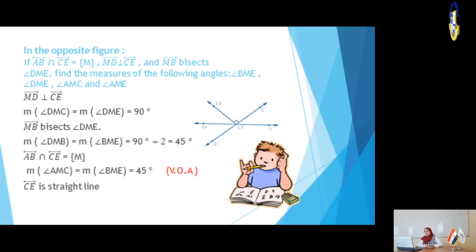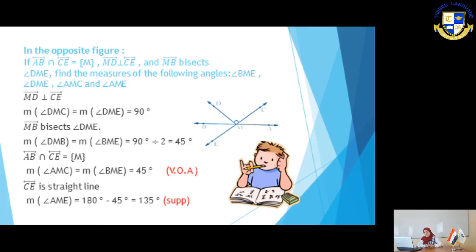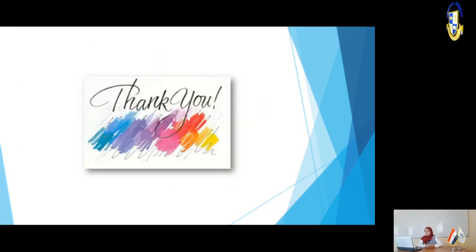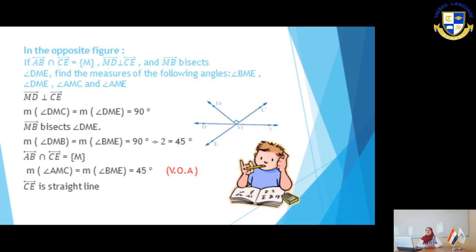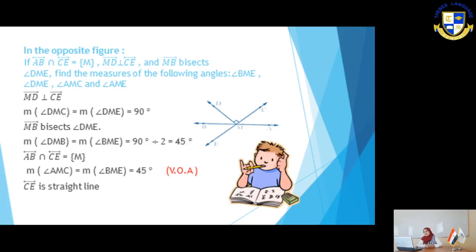Finally, CE is a straight line forming a straight angle of 180 degrees. So measure of angle AME equals 180 minus 45 equals 135 degrees. The reason is supplementary angles or straight angle. Alternatively, using accumulative angles: 360 minus (90 plus 90 plus 45) equals 135 degrees — the same answer.